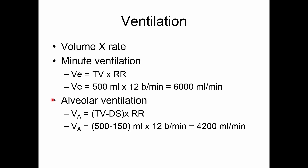Now we might want to know what's just going into the alveoli — what's the part exchanging gas. We'd have to subtract off something called the dead space: the air that's not exchanging gas, the air in your mouth, nose, pharynx, and airways. If we estimate dead space to be about 150 mils, then 500 minus 150 mils of alveolar volume times 12 breaths a minute gets us 4,200 mils per minute — about 4 liters a minute of typical alveolar ventilation, which is the air actually exchanging gas.